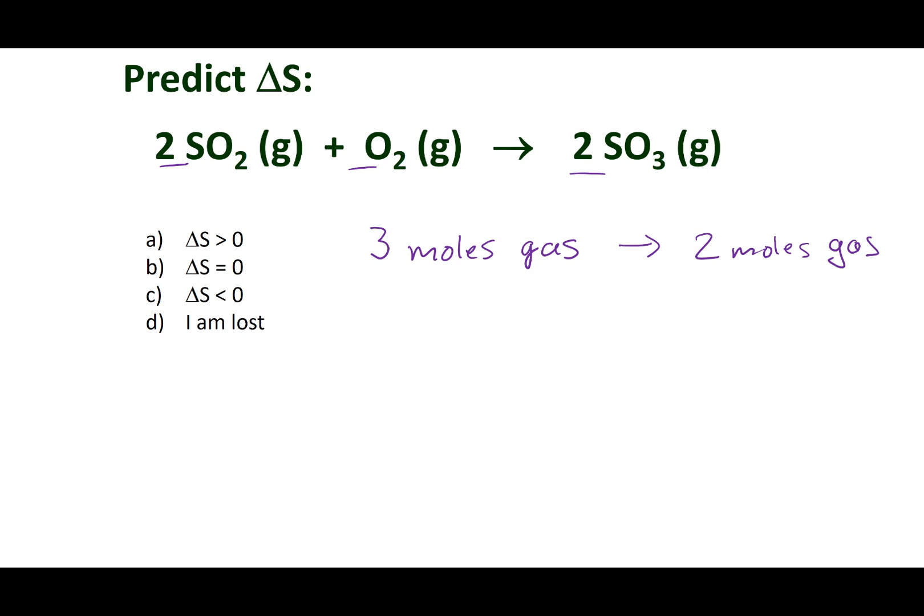And so what we can think about is, is it more disorder to have three things or two things? Three things can lead to more disorder. There's more arrangements, more microstates with three things than there are with two things. So that means in this particular reaction I'm going from three, which has more entropy, to something with two with less entropy. So that means my delta entropy is going to be negative. I'm going towards more order.